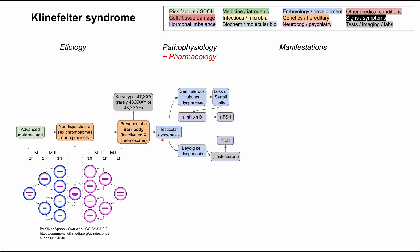Now for the LH: part of the testicular dysgenesis is also Leydig cell dysgenesis, which means you won't be making testosterone. That breaks the feedback inhibition and results in high LH. When you have high FSH and high LH, you'll have increased conversion of testosterone to estrogen, and that further exacerbates the low testosterone state. So not only are your Leydig cells not working and you're not producing enough testosterone, you're also increasing the conversion of testosterone to estrogen.